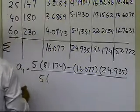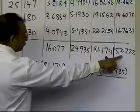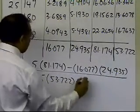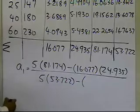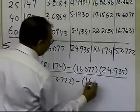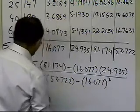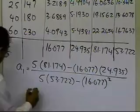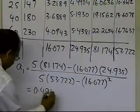Divided by n, which is 5, times the summation of all the w squared values, 53.722, minus the summation of w squared, which is 16.077 squared. This a_1 turns out to be equal to 0.4910.